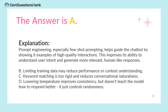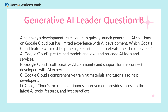Prompt engineering, especially few-shot prompting, helps guide the chatbot by showing it examples of high-quality interactions. This improves its ability to understand user intent and generate more relevant, human-like responses. Limiting training data may reduce performance or context understanding. Keyword matching is too rigid and reduces conversational naturalness. Lowering temperature improves consistency, but doesn't teach the model how to respond better — it just controls randomness.